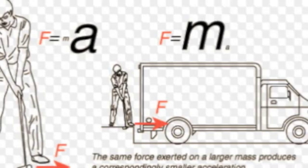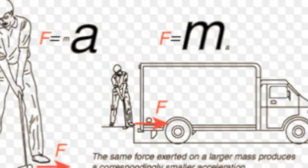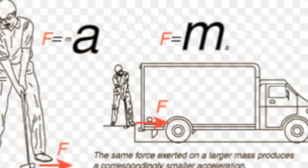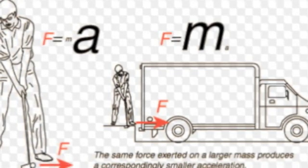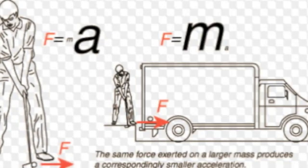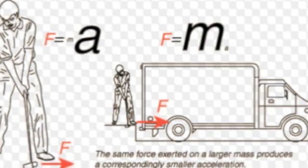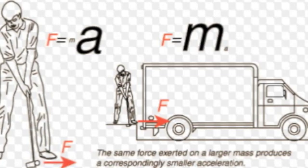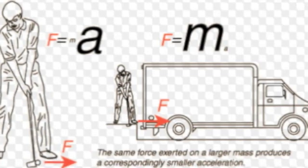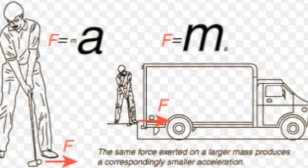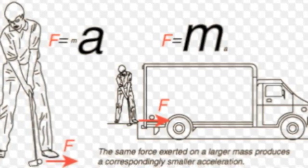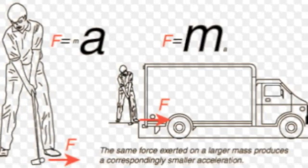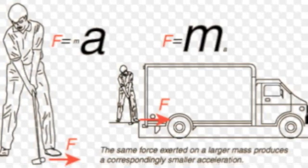The second law states that the acceleration of a body is directly proportional to the net force acting on the body, and inversely proportional to its mass. It sounds like a mouthful, but it's just saying that the acceleration of an object increases as the force acting upon it increases. Yet the more mass you add to the object, the more the acceleration will decrease.